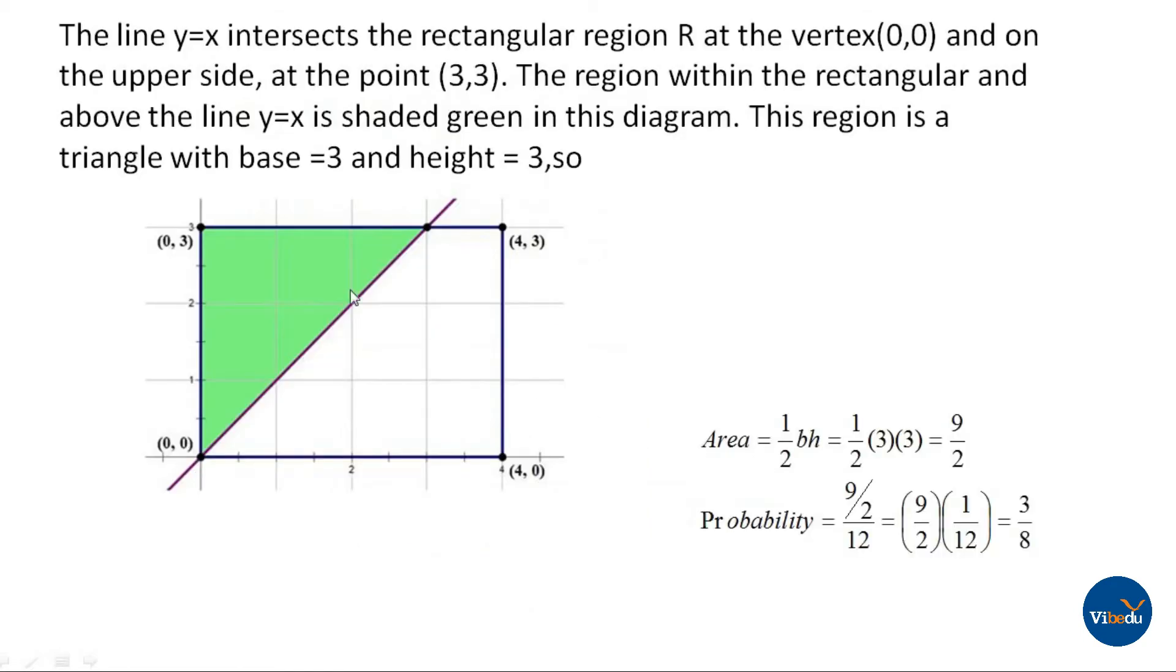The line y=x intersects the rectangular region R at vertex (0,0) and on the upper side at point (3,3). The region within the rectangle and above the line y=x, where x is 3 and y is 3, is shaded green in this diagram.